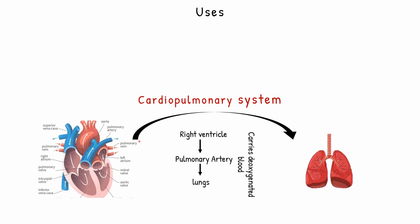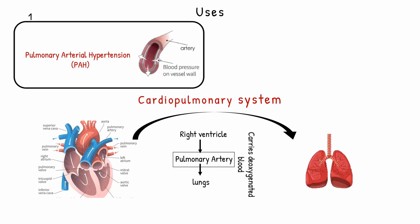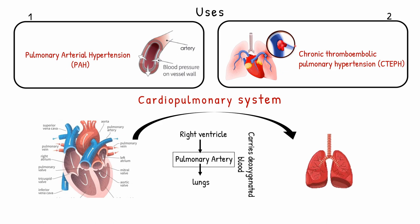We focus on the circulation involving the pulmonary artery because Riociguat acts on it. The first use is pulmonary arterial hypertension, where pressure exerts against the walls of the pulmonary artery. The other use is chronic thromboembolic pulmonary hypertension, which refers to high blood pressure in the pulmonary artery caused by vascular clots and related scarring.